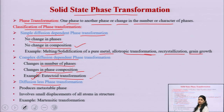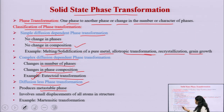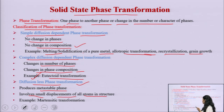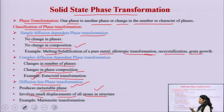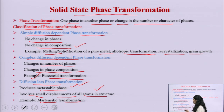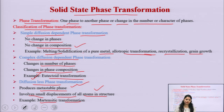Next, we come to the diffusionless phase transformation. In this case, it will produce a metastable phase and involve small displacement of all atoms in the structure. These are the two characteristics of diffusionless phase transformation, and the example is martensitic transformation. In this way, we can classify the phase transformation process.